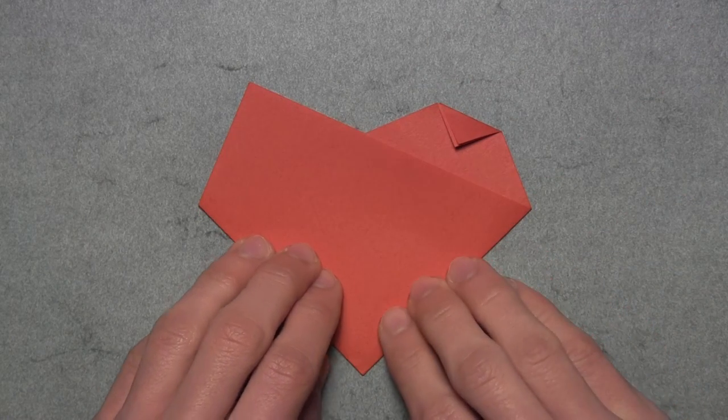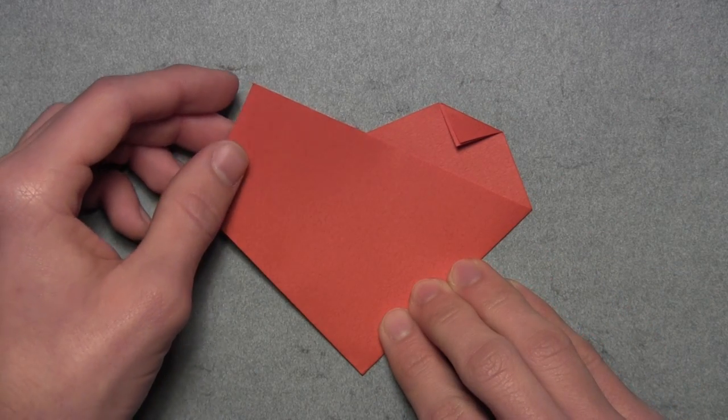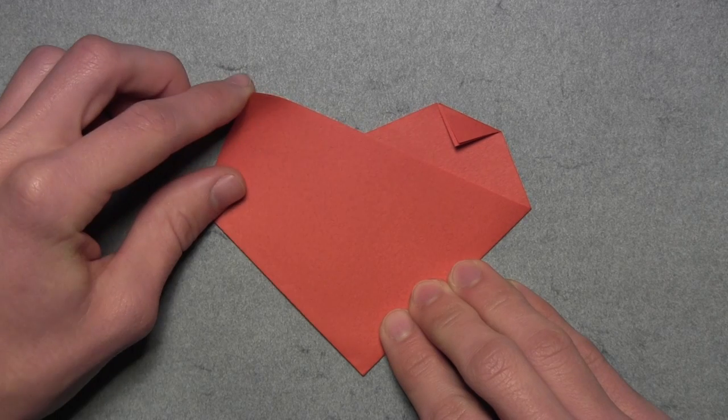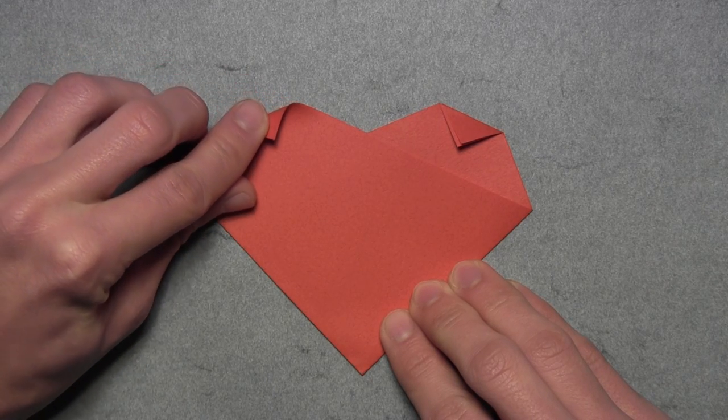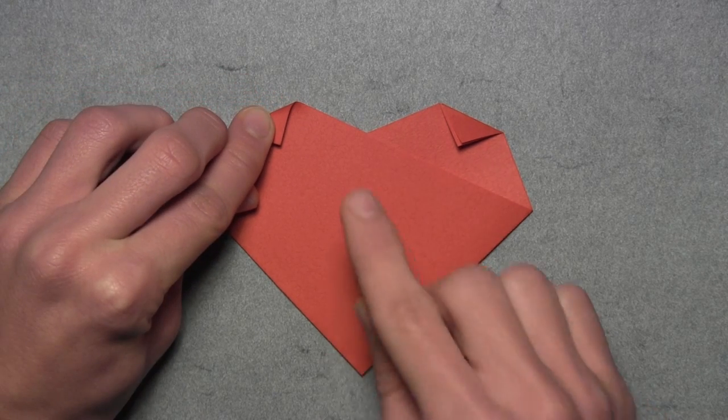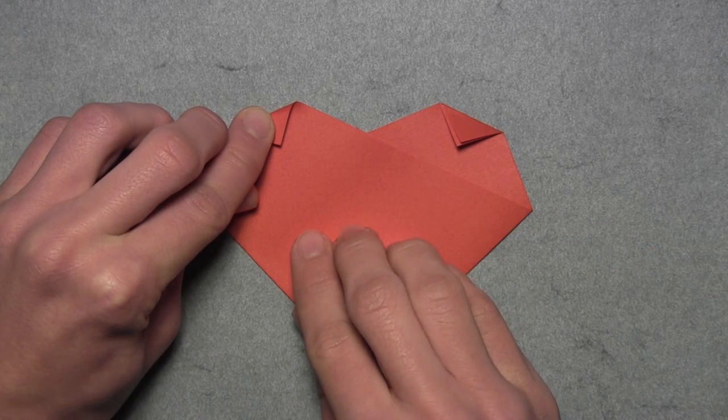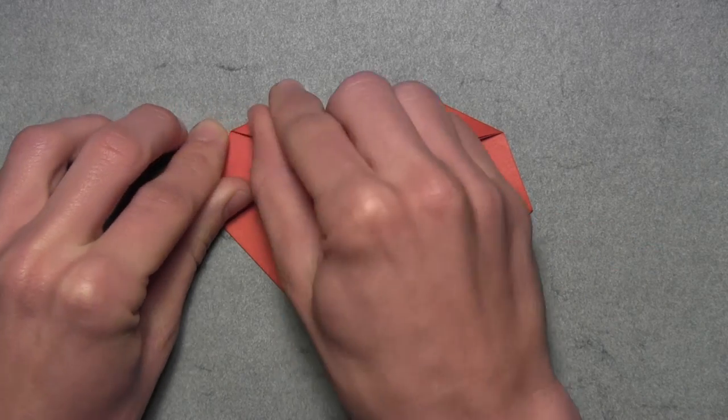Once you have that, we're going to do the same thing on the left. Once again, grab the two layers from behind and fold down the top left corner just like we did on the other side. From here you just want to make sure that both of these triangles are about the same size and then you can make your crease.